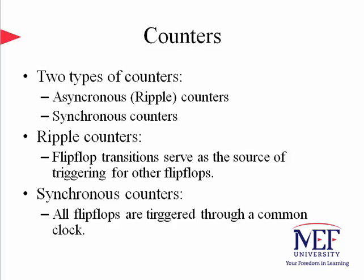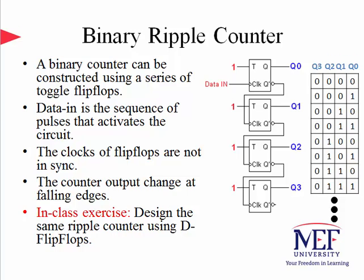A binary ripple counter can be realized using a complementing flip-flop — either a JK flip-flop by connecting the inputs, or a T flip-flop. The least significant bit Q0 is complemented with each count pulse of the input. Each time Q0' goes from 0 to 1 — in other words, Q0 goes from 1 to 0 — it complements Q1. Similarly, each time Q1' goes from 0 to 1, it complements Q2, and so on.